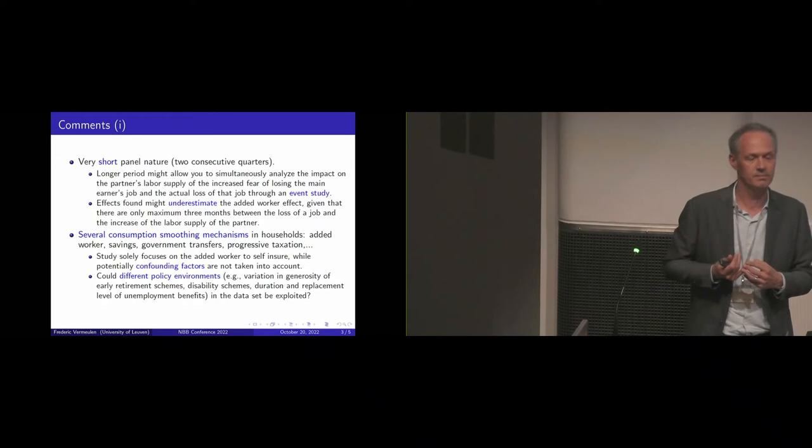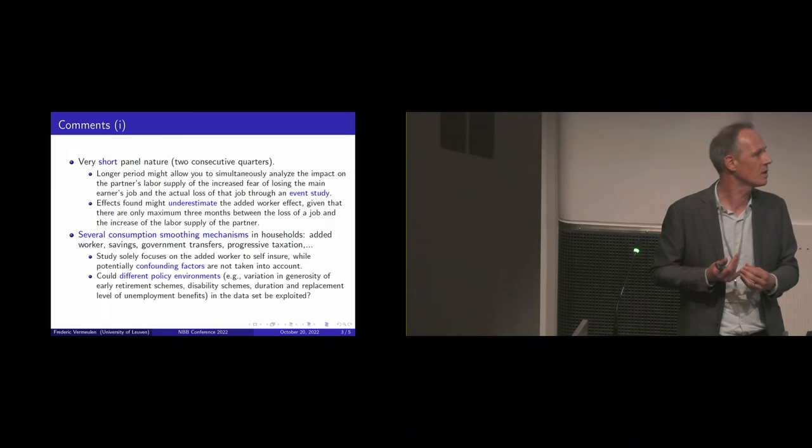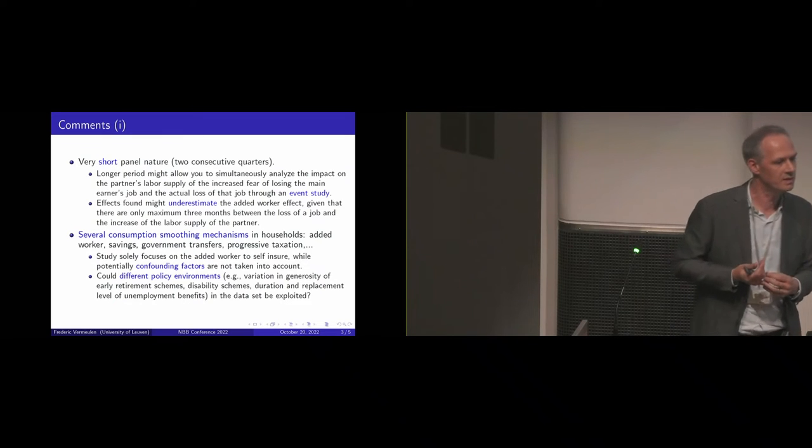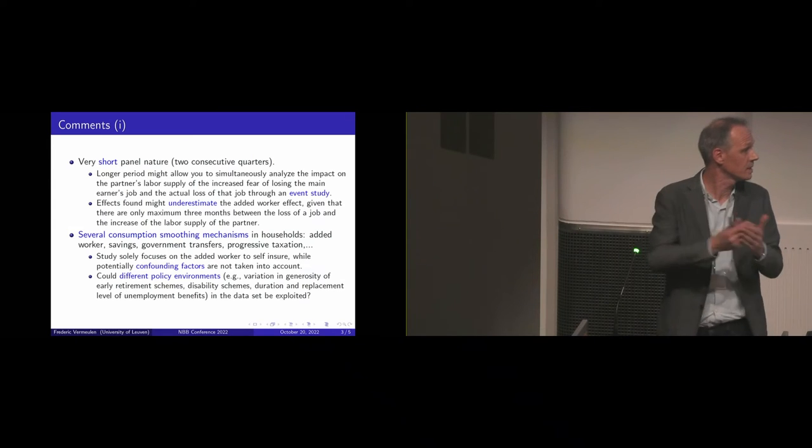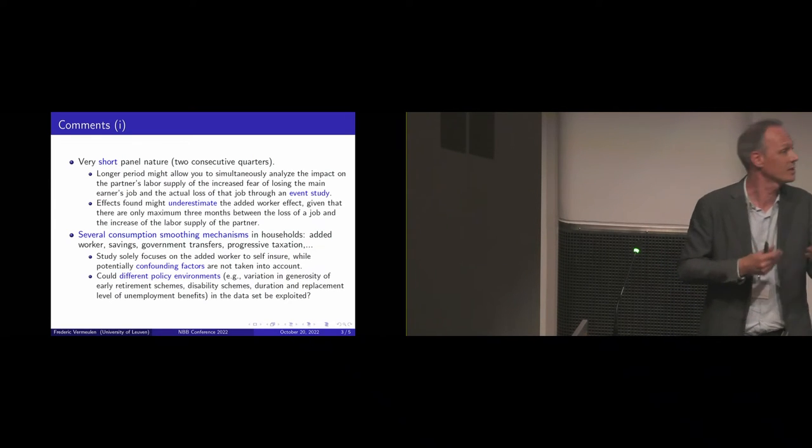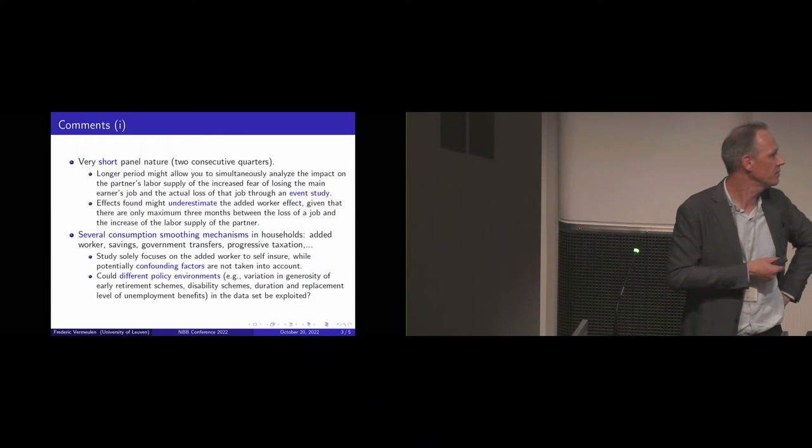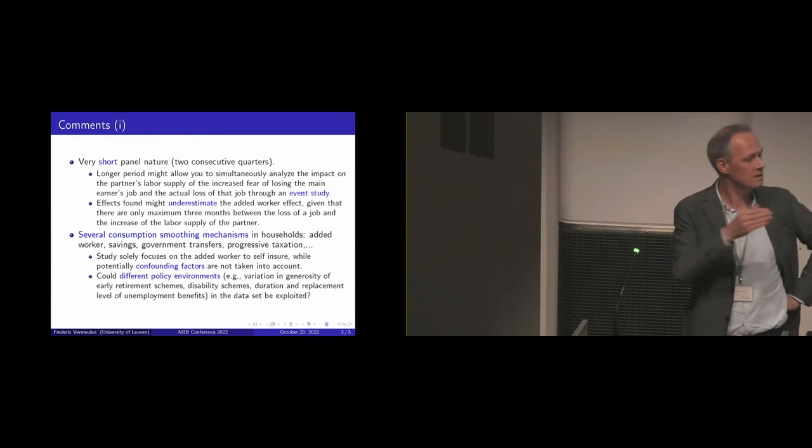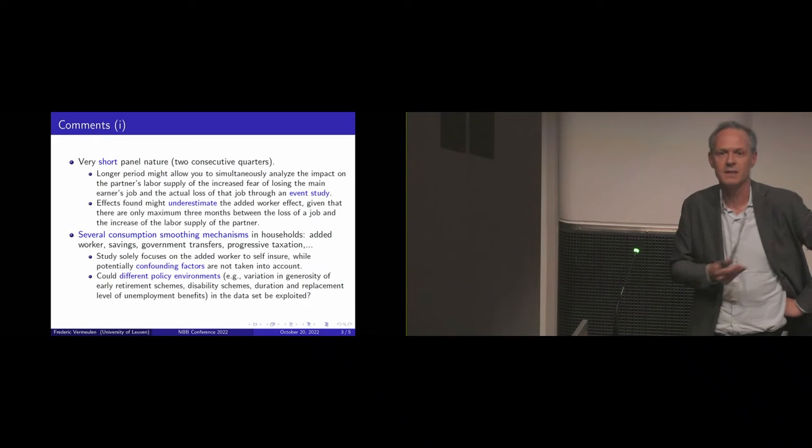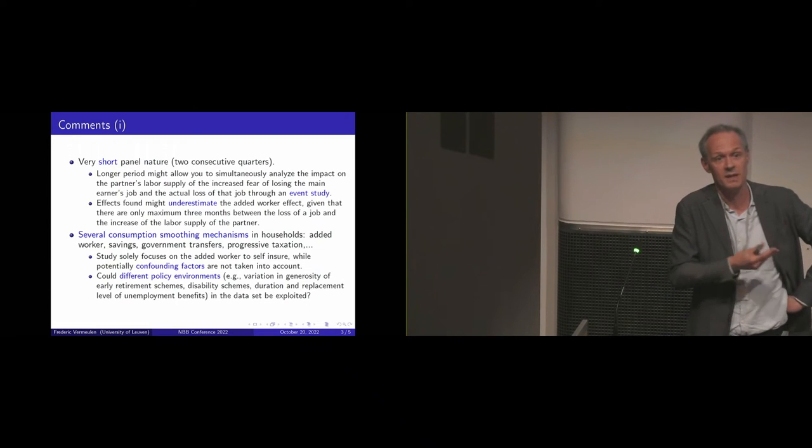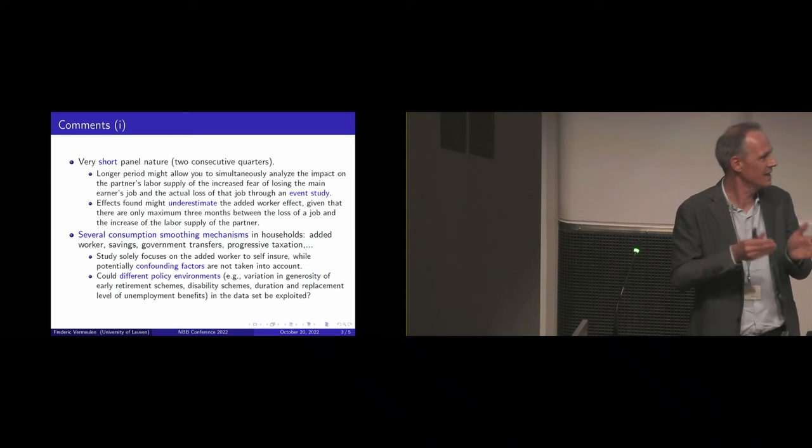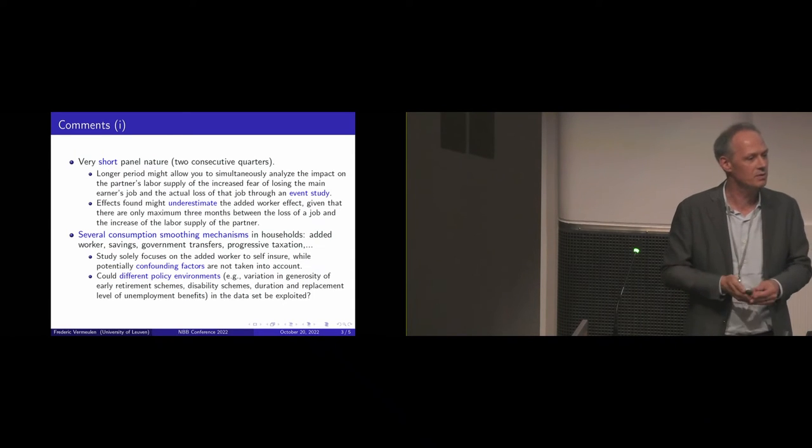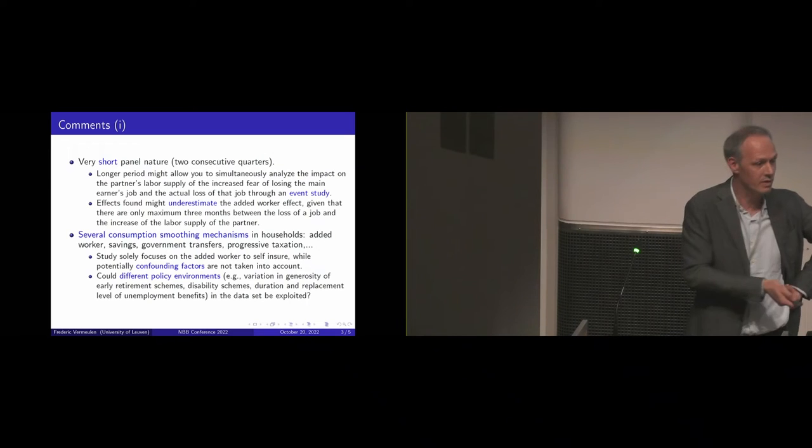For example, in many countries there are generous early retirement possibilities. There's disability schemes that are also used sometimes in terms of crisis, whether or not the individuals are really disabled or not. The duration and replacement rate of unemployment differs across all these 16 countries. So I think this is something that could be exploited. Especially once again you have 3.6 million of observations. Really hundreds of observations per country. This is really a cool environment.